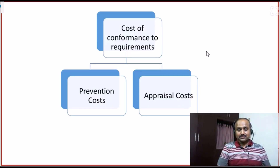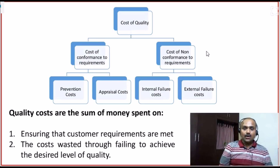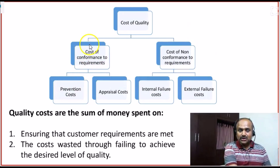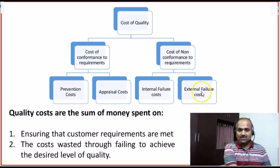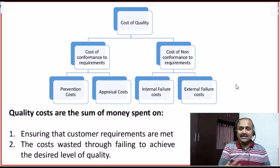My dear friends, cost of conformance to requirements consists of prevention costs and appraisal costs together. Cost of quality has two levers: cost of conformance requirements — ensuring requirements are met using prevention costs and appraisal costs — and cost of non-conformance requirements, which means internal failure costs and external failure costs. The cost wasted through failing to achieve the desired level of quality comes under cost of non-conformance requirements.